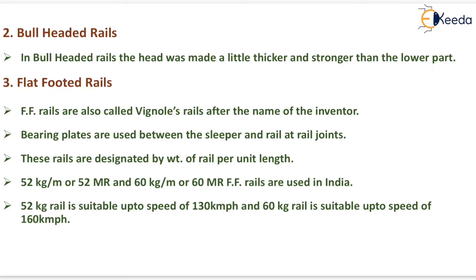The last type is the flat footed rail. Flat footed rails are also called Vignoles rails, after the name of the inventor. Bearing plates are used between the sleeper and rail at rail joints. These rails are designated by weight of rail per unit length. 52 kg per meter (52 MR) and 60 kg per meter (60 MR) flat footed rails are used in India. The 52 kg rail is suitable up to a speed of 130 km/h and the 60 kg rail is suitable up to 160 km/h.